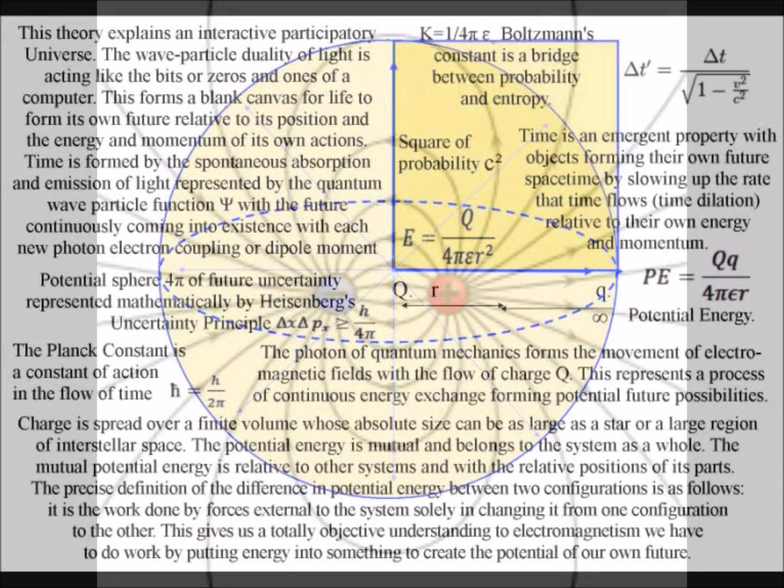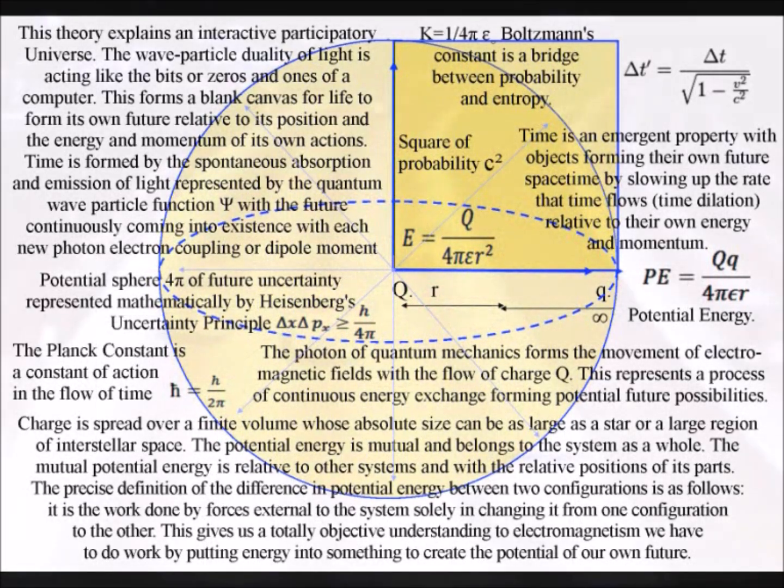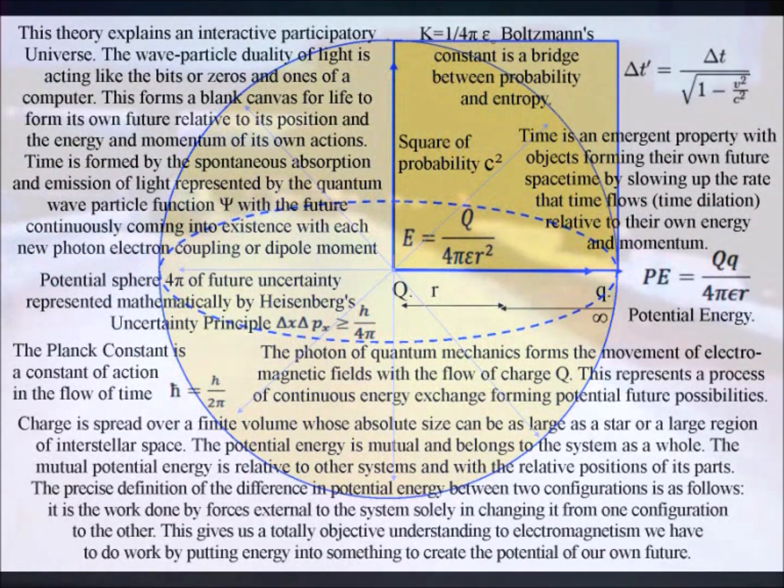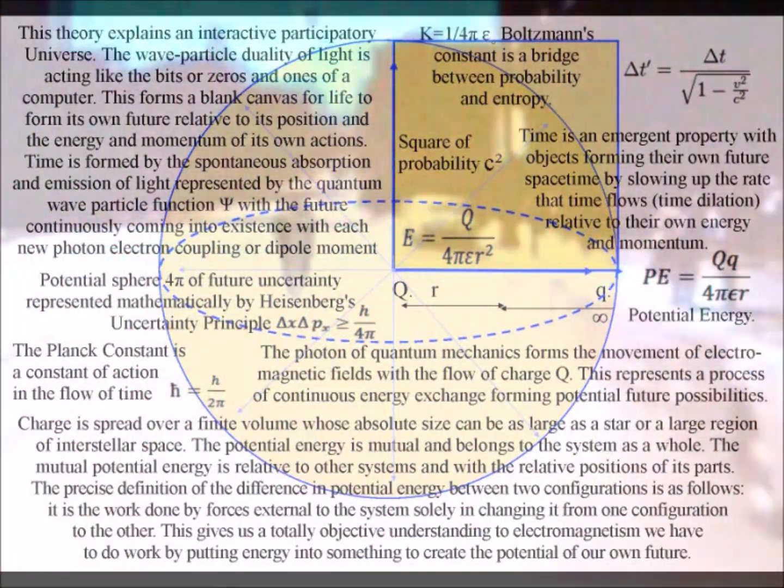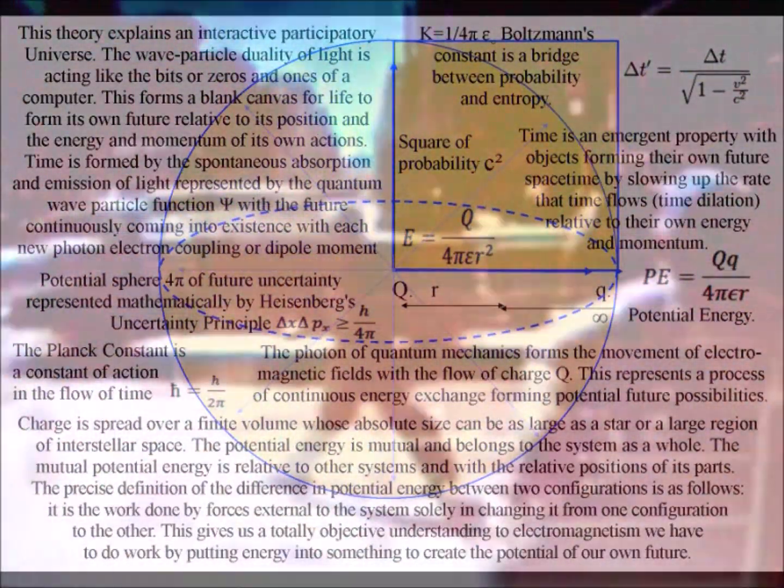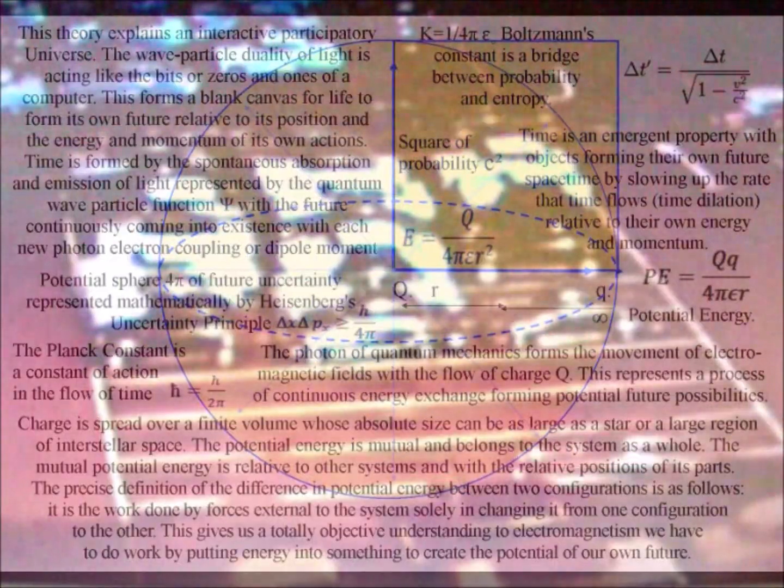Light also has momentum, and momentum is frame dependent. Therefore we have a universe made up of an infinite number of dynamic reference frames that are continuously interacting, coming in and out of existence. Each reference frame has its own timeline from the past into the future, with a potential uncertain future unfolding photon by photon with the movement of that charge.